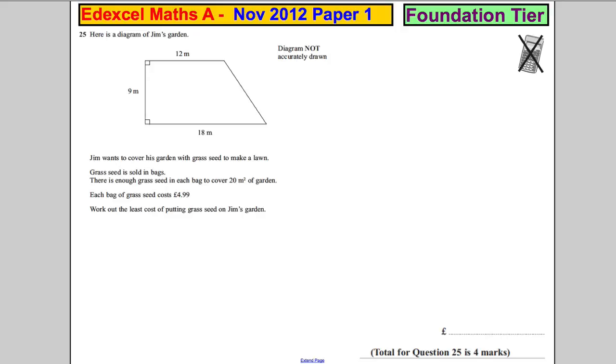Here's a diagram of Jim's garden and it's a quadrilateral. In fact, it's a trapezium. You know it's a trapezium because you know these are both right angles. These are both 90. So that side and that side are parallel.